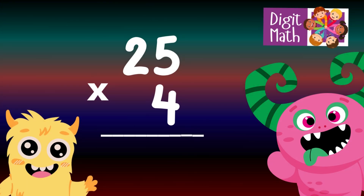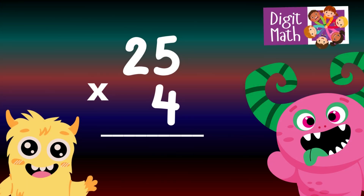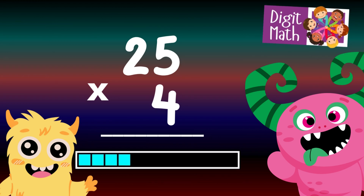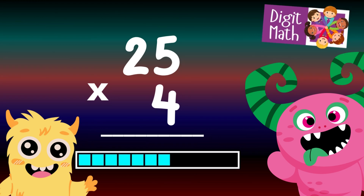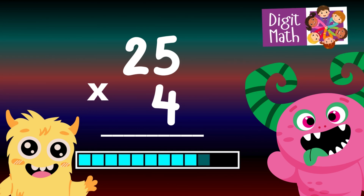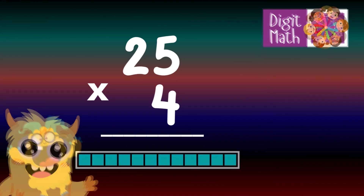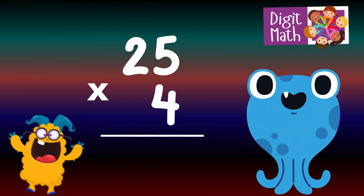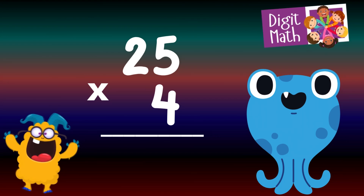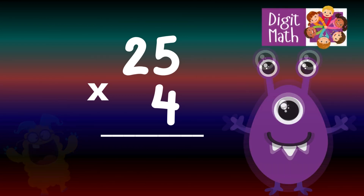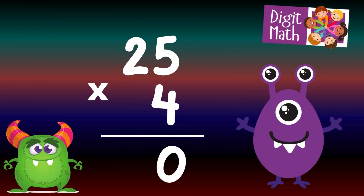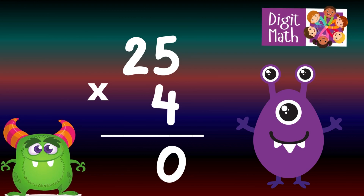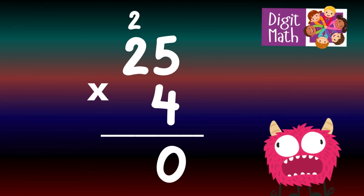25 times 4 — time to think. Let's go to the answer. To solve, multiply 25 by 4. In the Units column, multiply 5 by 4, which equals 20.